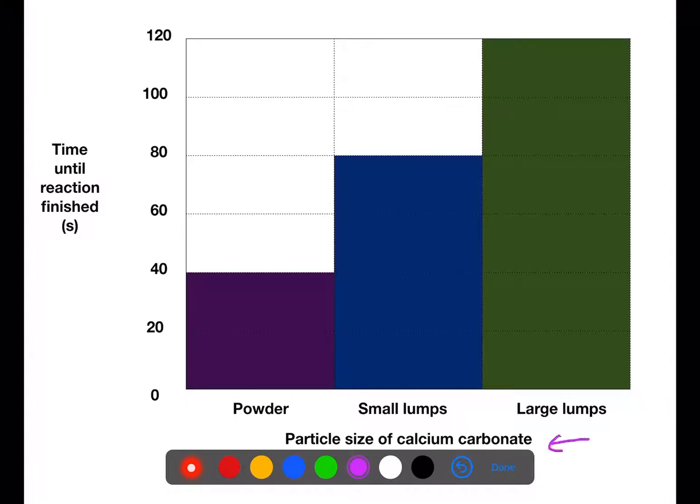As you can see we have a label for the x-axis. We have a label for the y-axis and units. There are no units for the particle size but there are units for time. We have three different particle sizes with the bars evenly sized and spaced. And then we have our scale on the y-axis going up in twenties.